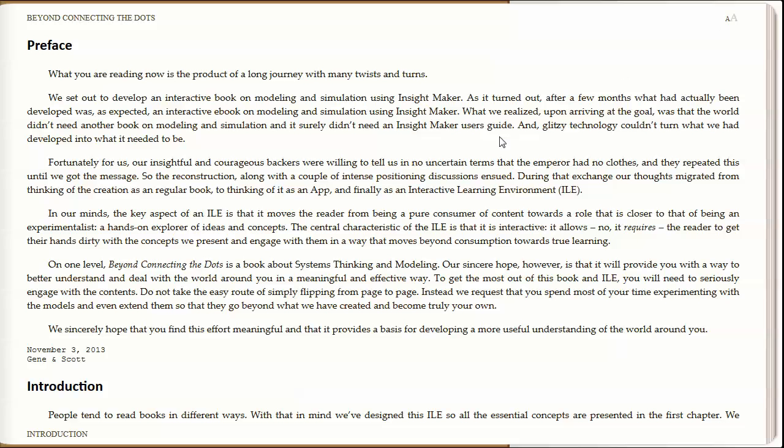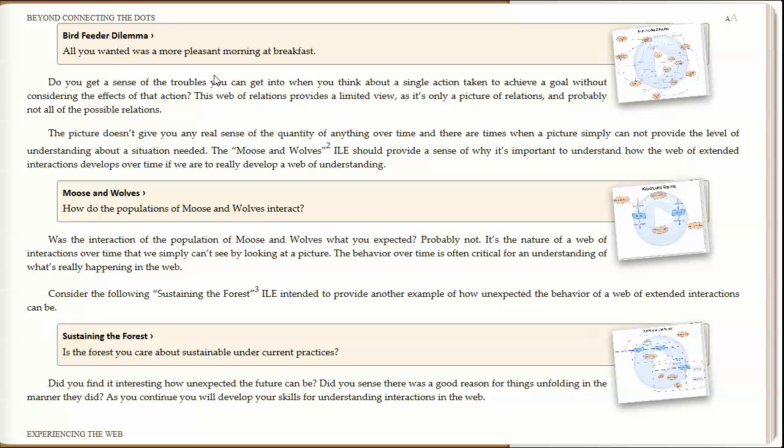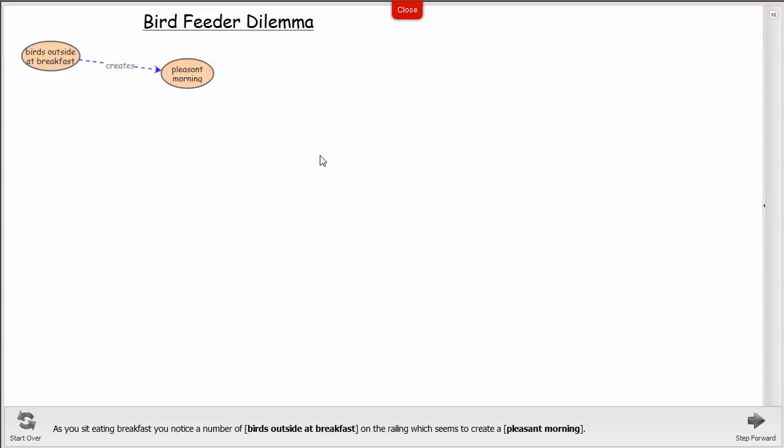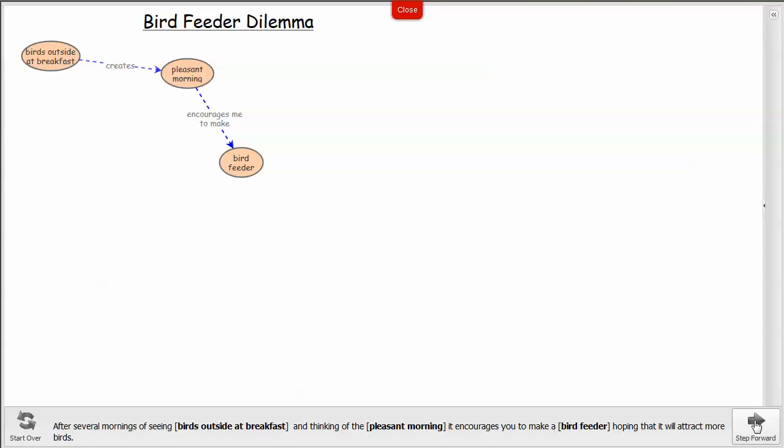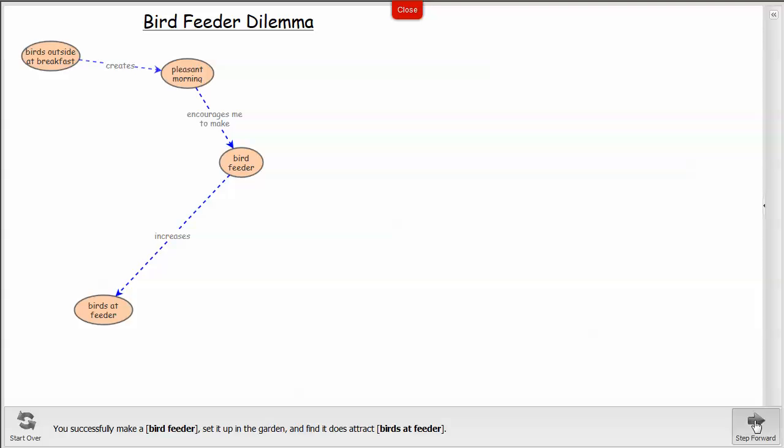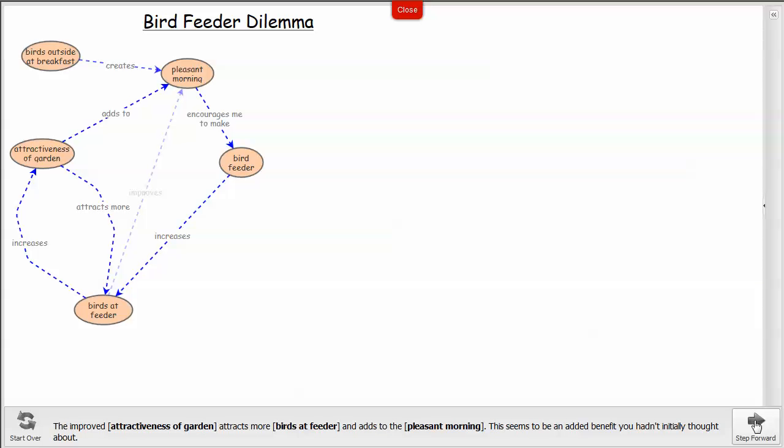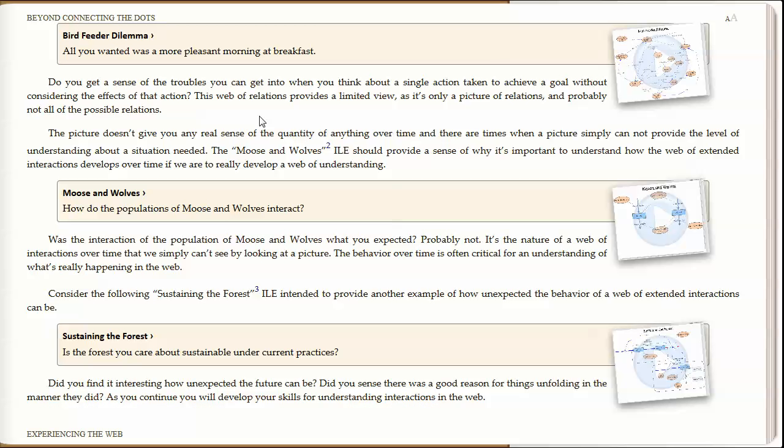And there's where the similarity between Beyond Connecting the Dots and typical e-books ends. Because as you move, as you read through the book, you will run into insets which are actually links to embedded models, which if you click on the title will take you into an environment where, in some instances, the model is simply a storytelling unfolding of a model that has been created, and once you finish the story, if you click close, it will take you back to the place that you were in the text.